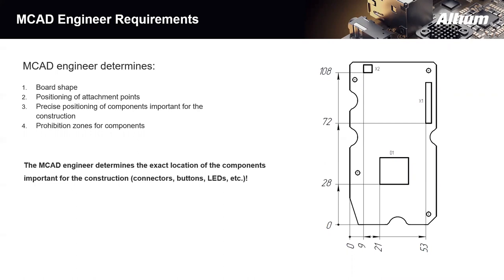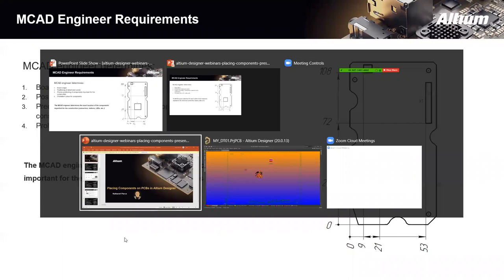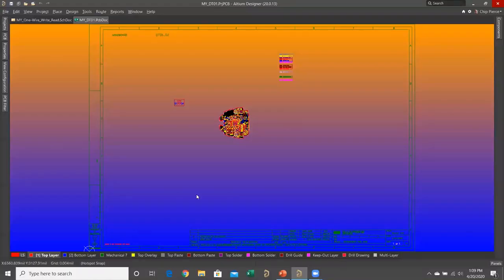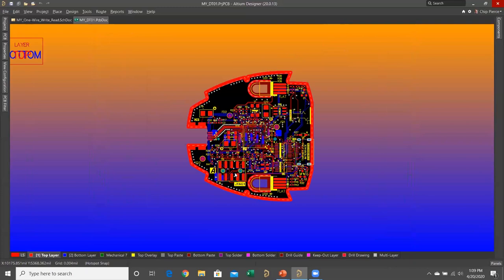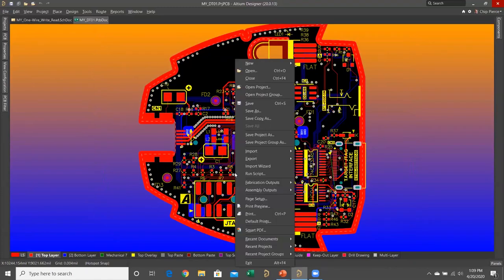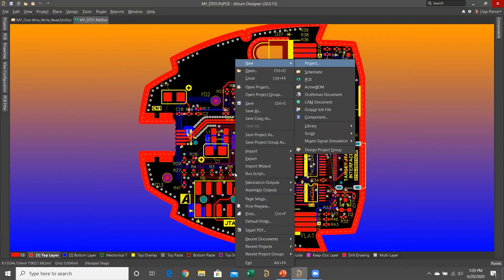A question came in: what about that D1 section — it looks like a board cutout. How do I create a board cutout in Altium Designer? Good question. I'm going to open up Altium Designer briefly and show you. I've got a finished PCB, but I'll create a new one with File > New > PCB. That's going to create a blank PCB using a template I've set up in Preferences.